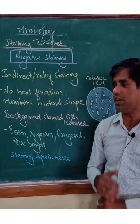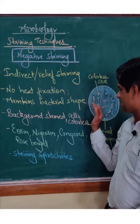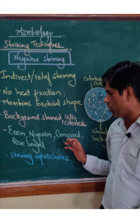The background in this is colored whereas the cells are colorless. It uses various acidic dyes like eosine, nigrosine, congo red, and rose bengal. It is used to stain organisms difficult to stain, like spirochetes.